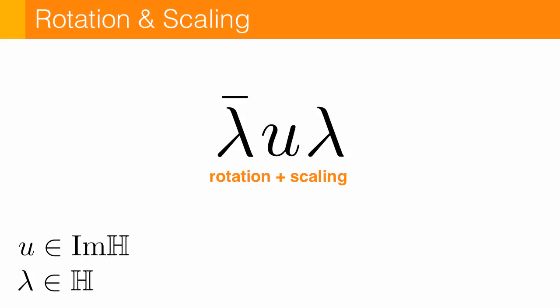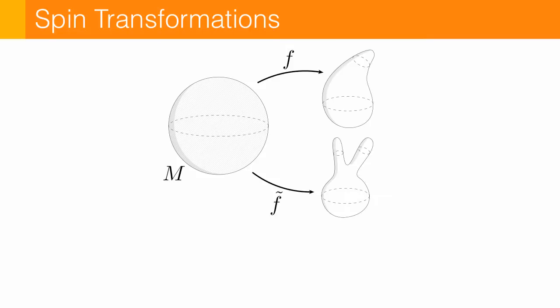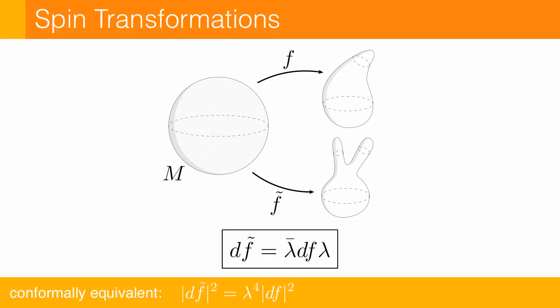So again, if I have an abstract surface M, and now two different geometries, F and F tilde, then I'll say F tilde is a spin transformation of F if the differentials are related by conjugation by a quaternion valued function. Or put more simply, as we go from one surface to the other tangent planes just get rotated and scaled. And in fact, it's not hard from here to show that indeed spin equivalence implies conformal equivalence.